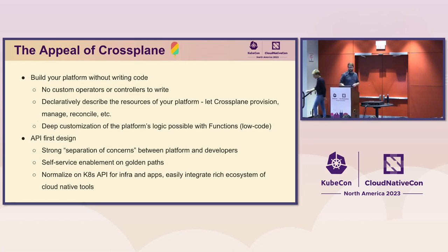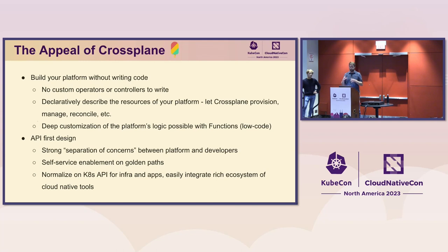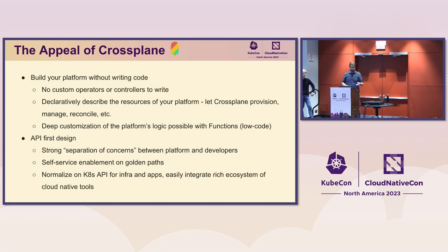So we have an idea of where Clement's team was, the problems they had, and the challenges they faced. This is when they started looking at Crossplane. The very first thing to understand is that Crossplane is a framework — it allows you to build your own platform without writing code. His team had been writing custom operators and controllers, which is more software to maintain and more complexity.